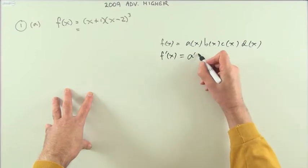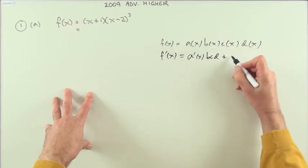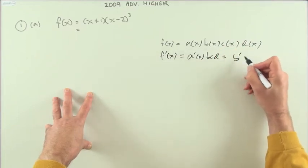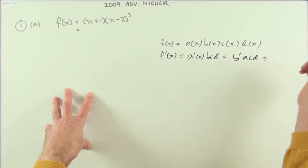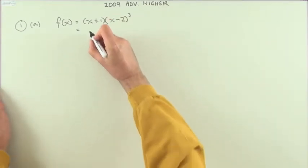So it would start off with a dashed of x, leaving the b, c and the d alone, and then b dashed of x, leaving the a, c and d alone, and so on. Just let them take turns. So, for this one,